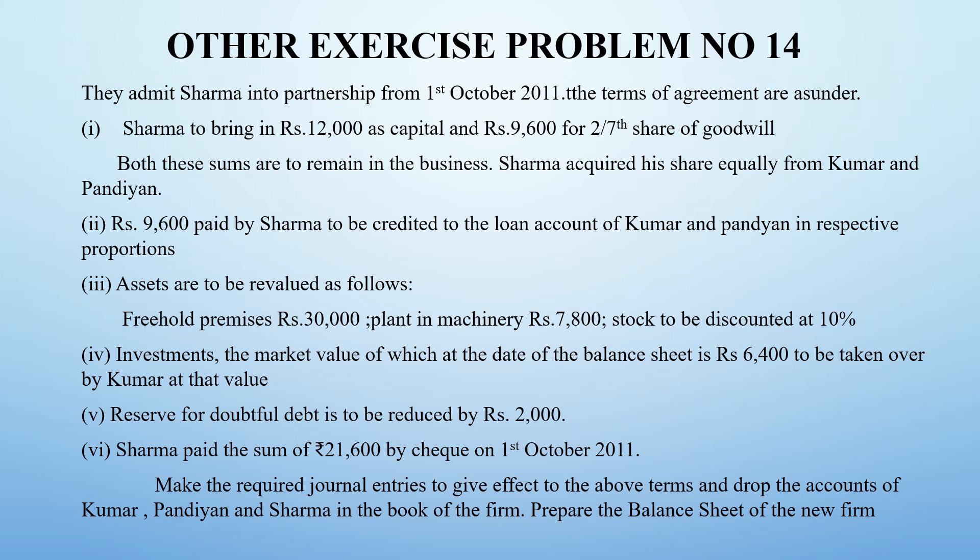If we have to transfer to the capital account, they cannot withdraw that goodwill from the business. In the other case, the ₹9,600 paid by Sharma is to be credited to the loan account of Kumar and Pandian in their respective proportions — that is when we go to the loan account.